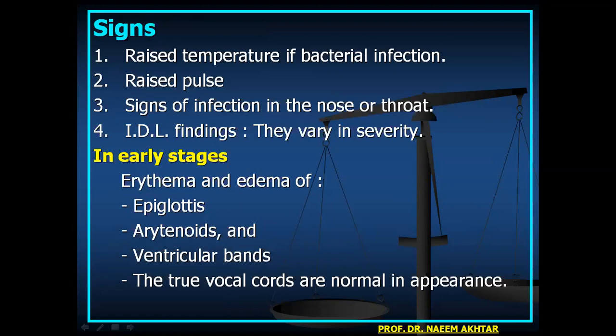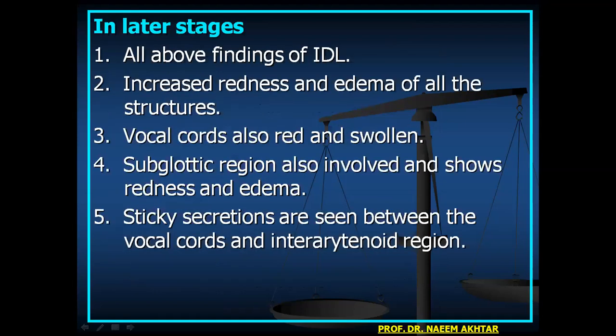Signs include raised temperature if bacterial infection is present, raised pulse, and signs of infection in the nose or throat. On indirect laryngoscopy, signs vary in severity. In early stages, there is edema and erythema of the epiglottis and arytenoids, while ventricular bands and true vocal cords appear normal. In later stages, there is increased redness and edema of all structures; vocal cords are also red and swollen. The subglottic region is also involved, showing redness and edema, with sticky secretions seen between the vocal cords and inter-arytenoid region.